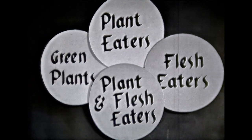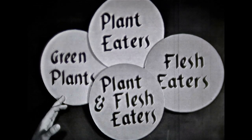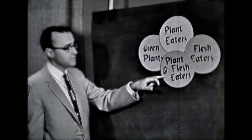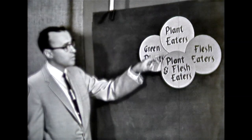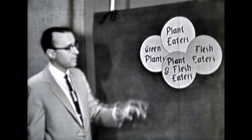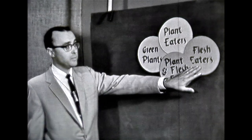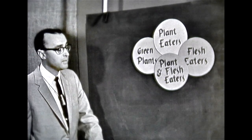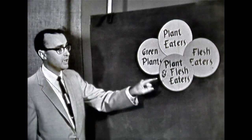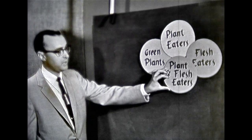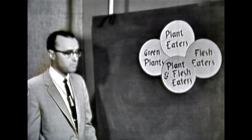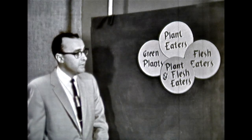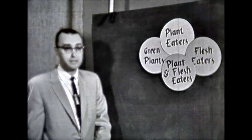Now let's review quickly what we've said. Green plants are eaten by plant eaters and plant and flesh eaters. Plant eaters would eat only green plants. I wonder if someone could tell me which animals flesh eaters would eat. Well, they would certainly eat plant eaters and they would also eat these plant and flesh eating animals, wouldn't they? Perhaps I can show you a better demonstration of this by using some specific plants and animals.